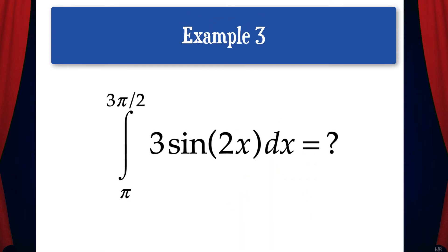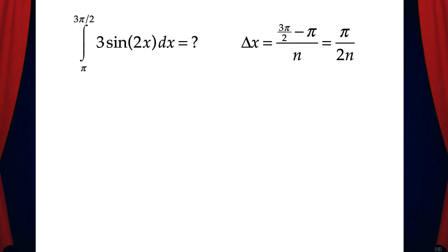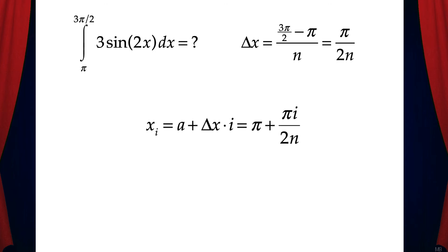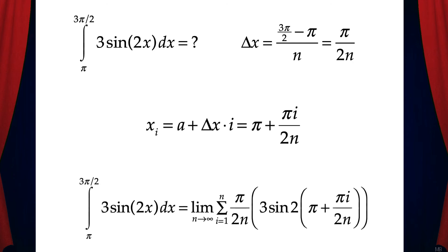Let's do another example. Here we have the integral from pi to 3 pi over 2 of 3 sine 2x dx. Delta x is 3 pi over 2 minus pi, over n, which simplifies to pi over 2n. Then x sub i is a plus delta x times i, giving us pi plus pi i over 2n. The final answer: the integral from pi to 3 pi over 2 of 3 sine 2x dx equals the limit as n goes to infinity of the sum where i goes from 1 to n of pi over 2n times 3 sine of 2 times the quantity pi plus pi i over 2n. Pi over 2n is delta x and 3 sine of 2 times the quantity pi plus pi i over 2n is f of x sub i.